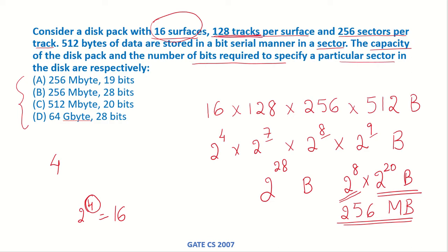128 tracks per surface, that means 7 bits will be required to access a particular track on a surface. So once you know which surface you are on then you will need an additional 7 bits to identify the track.